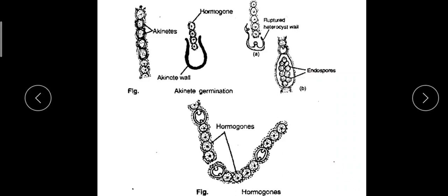When it occurs, the protoplast of a cell divides into small, tiny bits, and each of the bits transforms to an endospore. These endospores, each endospore, germinate to form a new filament.